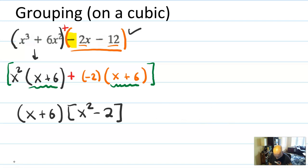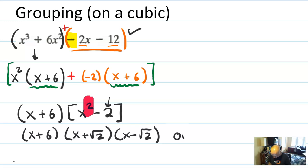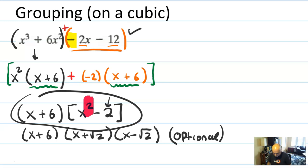You might ask, Mr. Eck, is this factored fully? I see an X squared there. Well, X squared minus 2 — 2 is prime, so you're not going to be able to divide it further. Technically, if you want to be pedantic, you could write X plus 6 times X plus root 2 times X minus root 2, because any number is a perfect square if you accept square roots. But I'll say that's optional, and I would factor it as X plus 6 times X squared minus 2.